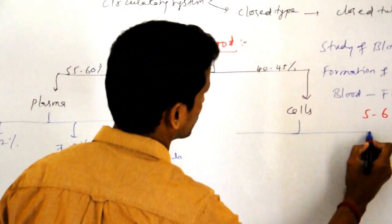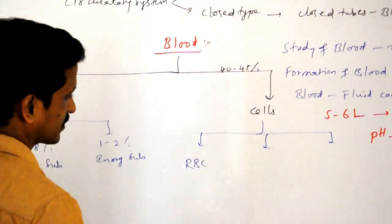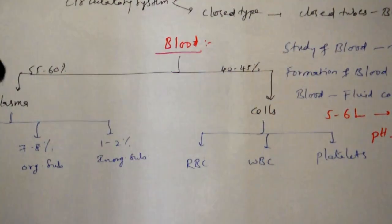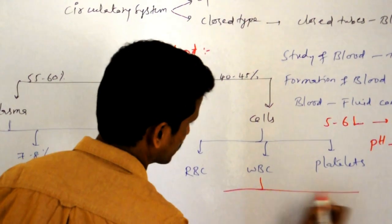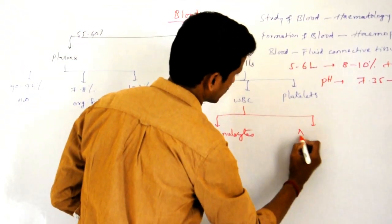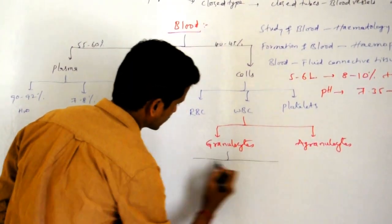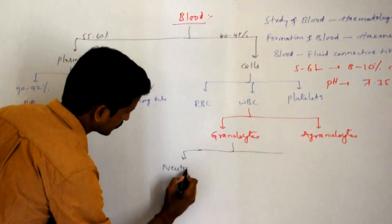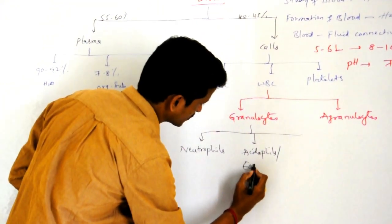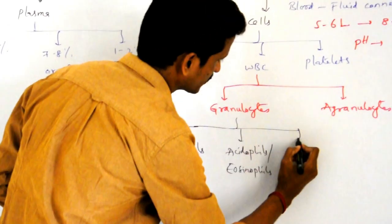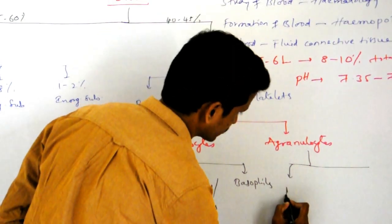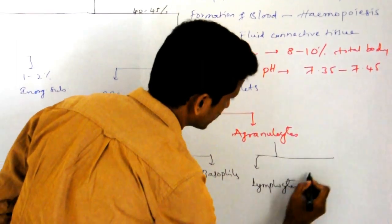Among cells, blood possesses three types: RBC (red blood cells), WBC (white blood cells), and platelets, also called thrombocytes. WBC is divided into two types: granulocytes and agranulocytes. Granulocytes are further divided into three types: neutrophils, acidophils (eosinophils), and basophils. Agranulocytes are divided into lymphocytes and monocytes.